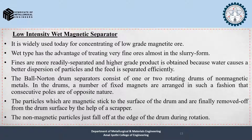Fines are more readily separated and a higher grade product is obtained because water causes better dispersion of particles and the feed is separated efficiently. The Ball-Norton drum separator consists of one or two rotating drums of non-magnetic materials. Inside the drums, a number of fixed magnets are arranged such that consecutive poles are of opposite nature. Magnetic particles stick to the drum surface and are removed by a scrapper.